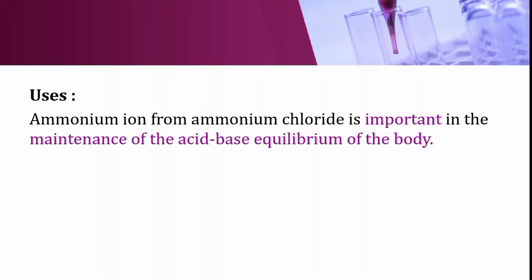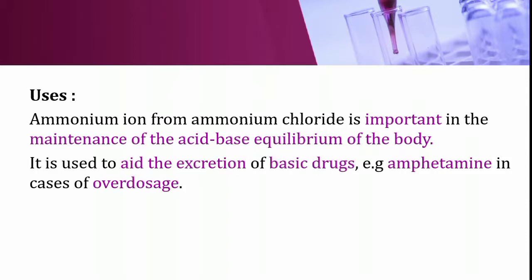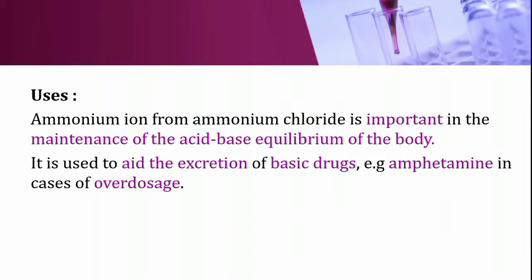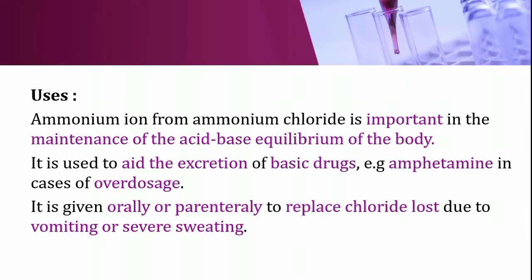The ammonium ion from ammonium chloride is important in the maintenance of acid-base equilibrium in the body. It is also used to aid excretion of basic drugs, for example amphetamine, in cases of overdose. Ammonium chloride is given orally or parenterally to replace chloride lost due to vomiting or severe sweating, and it also has a diuretic effect.